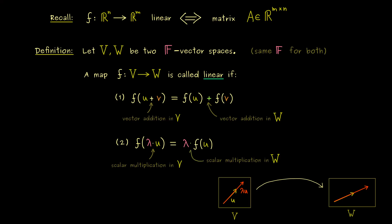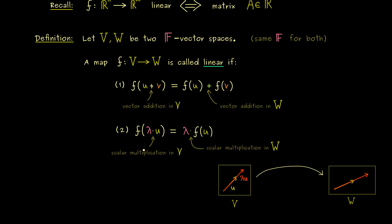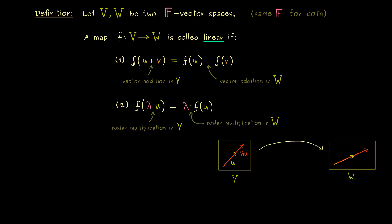A linear map always makes sense for vector spaces — we just need to satisfy these two properties for every vector u and v and every scalar lambda. And you see why it's important that we consider the same field on both sides, because otherwise pulling out the scalar would cause problems.